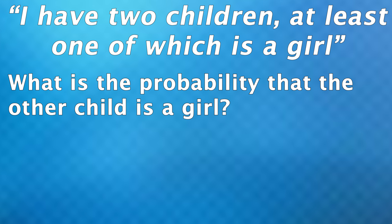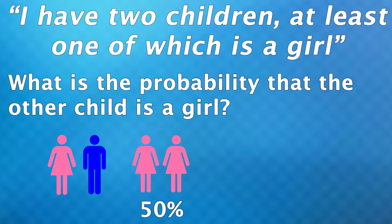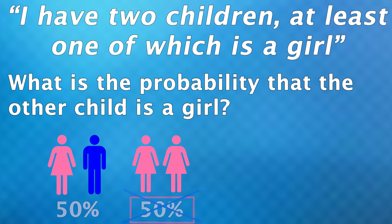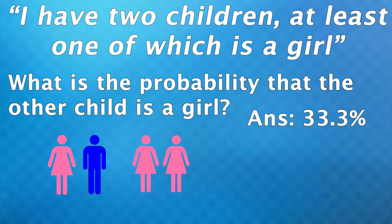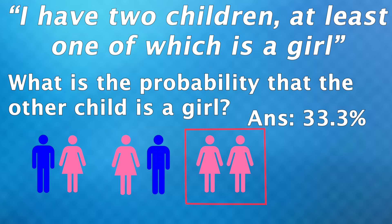For this question, most people say: well, I know for this family the children consist of either a boy and a girl, or two girls — since it cannot contain two boys. But many people wrongly say this means there's a 50% chance of two girls and a 50% chance of a mix. This is wrong. The real answer is one third, or 33.3%, because there are actually three equally likely outcomes: a boy born first and a daughter born second, the other way around where the daughter is older, and two girls. We want the probability that both are girls, which is one out of three.